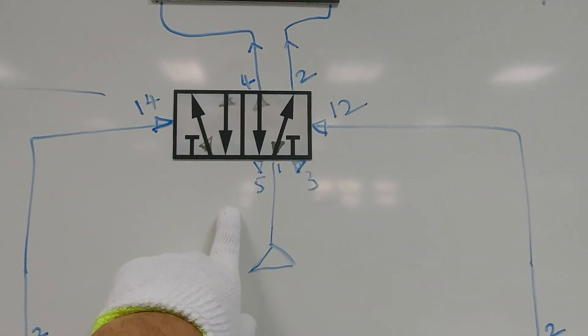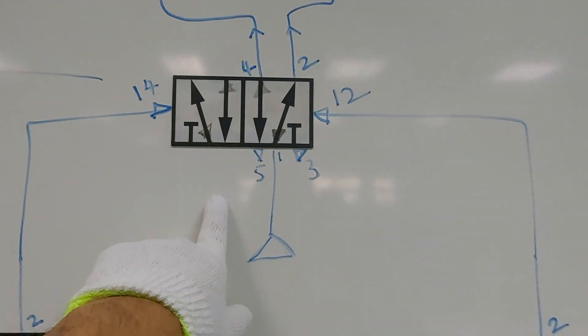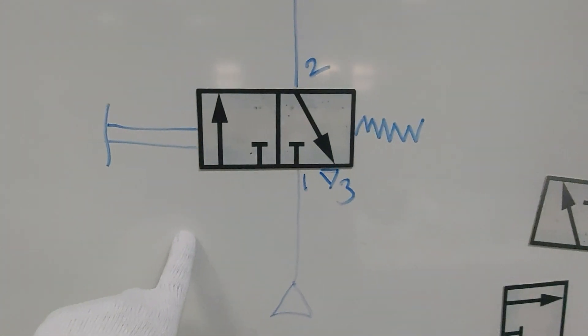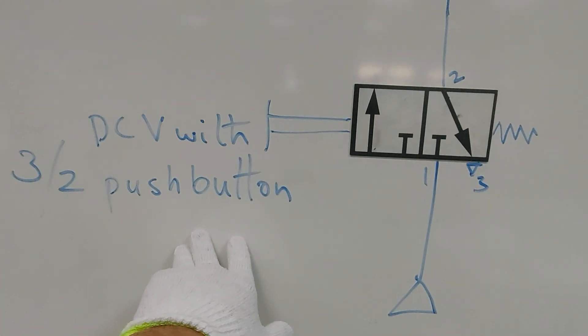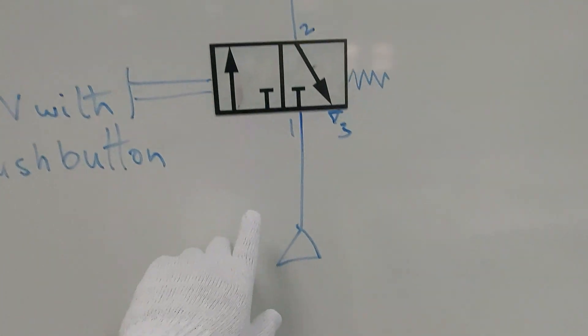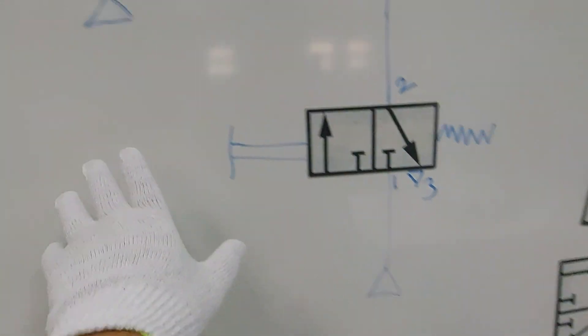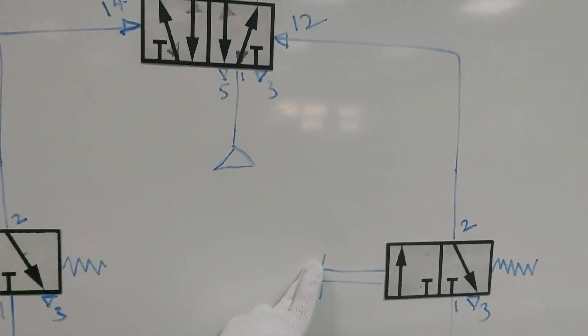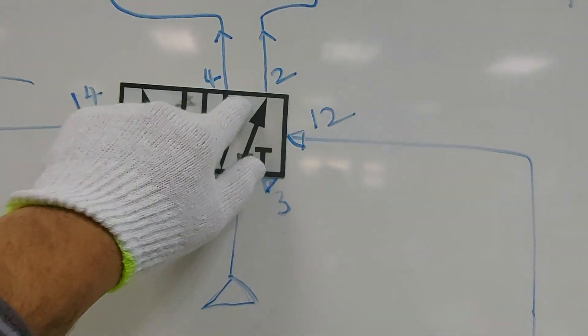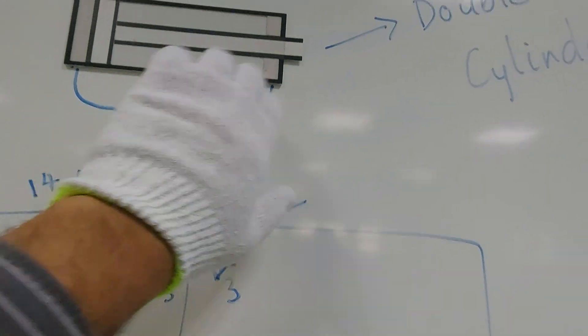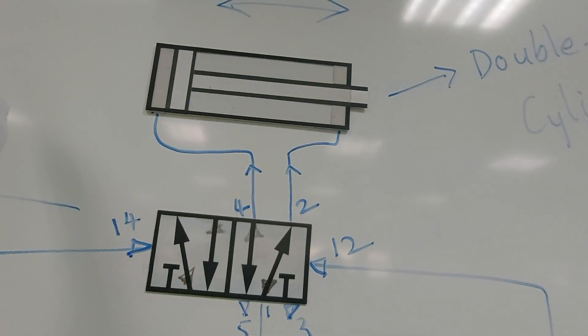So 5x2 double pilot. And you have 2 push buttons normally closed and connected to distributor. So when you press this, the air will go from here and it will be supplied to the port 2. And the piston will come back, retract.